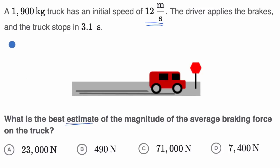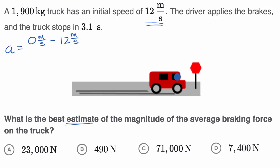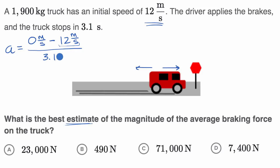Let's think about the acceleration. The acceleration is going to be our change in velocity over change in time, so that's our final velocity minus our initial velocity in the numerator. Our final velocity is zero meters per second — we come to a stop — minus our initial velocity of 12 meters per second. The convention is that moving to the right is positive and moving to the left is negative. The truck is moving to the right at 12 meters per second, so we're subtracting that positive velocity. The change in time is 3.1 seconds.